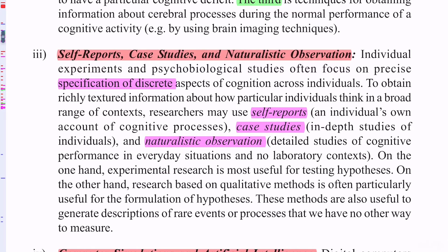Self-reports, case studies, and naturalistic observation: individual experiments and psychobiological studies focus on precise specification of discrete aspects of cognition. To obtain richly textured information about how particular individuals think in a range of contexts, researchers may use self-reports — first-person accounts of cognitive processes — case studies, and naturalistic observations, which are detailed studies of cognitive performance in everyday situations and laboratory contexts.